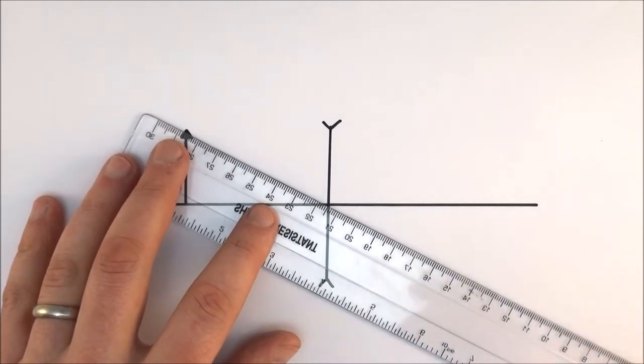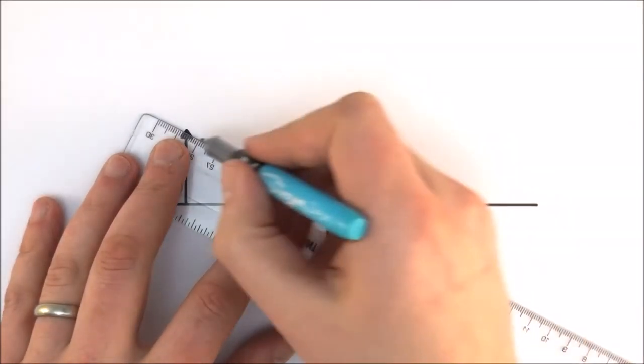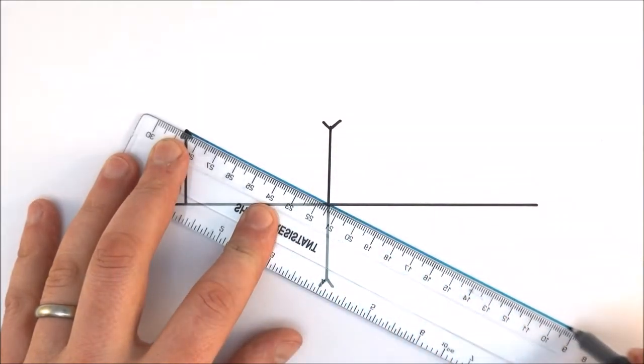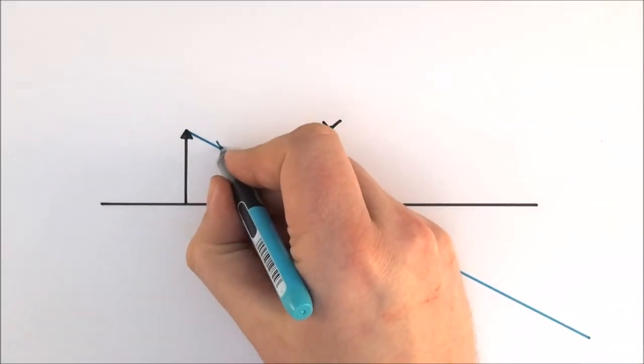If we consider a ray of light that comes from the top of the object, it just comes from the object through the center of the lens and keeps going in a straight line. So that's our first ray.